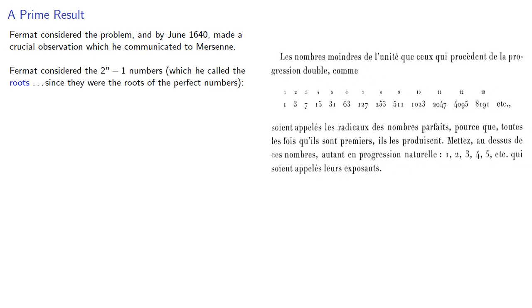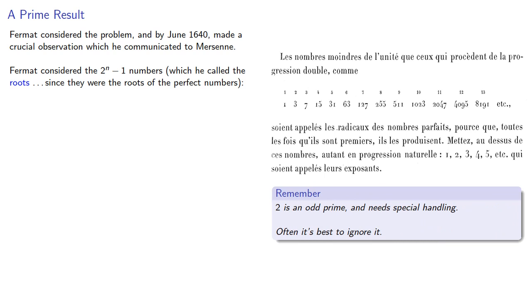Still, Fermat must have thought number theory to be important enough to be worth the extra time and effort, and by June 1640, he made a crucial observation which he communicated to Mersenne. Fermat considered the 2^n - 1 numbers, which he called the roots, since they were the roots of the perfect numbers. Going forward, it's useful to remember that 2 is an odd prime and requires some special handling, and often it's best to ignore it.